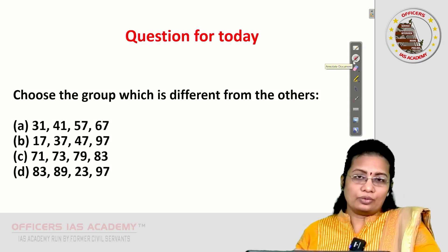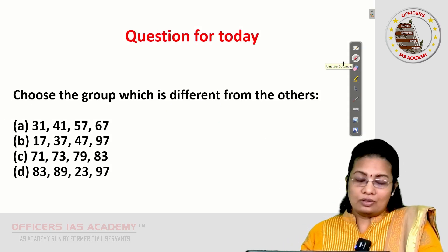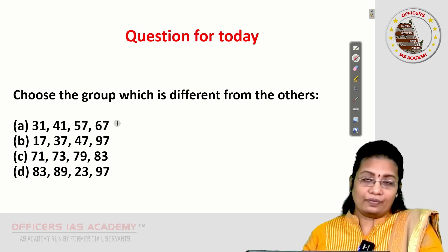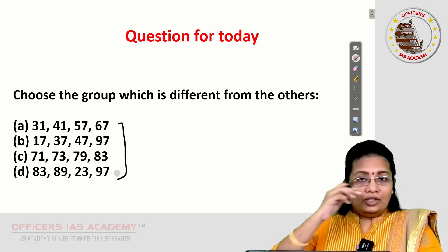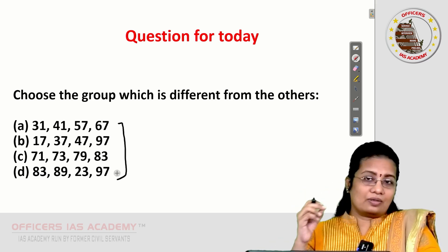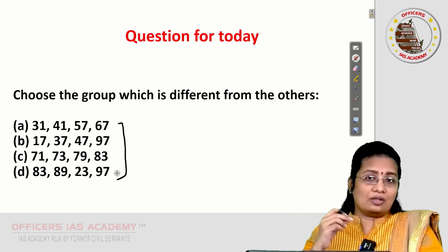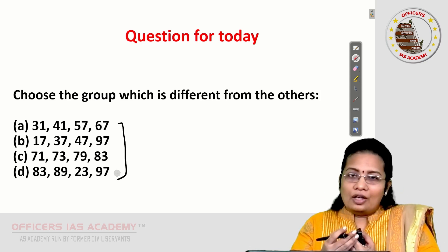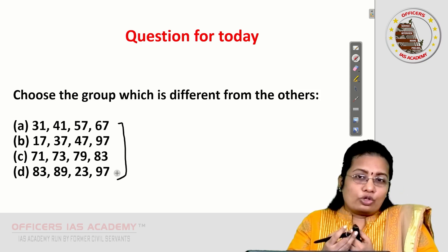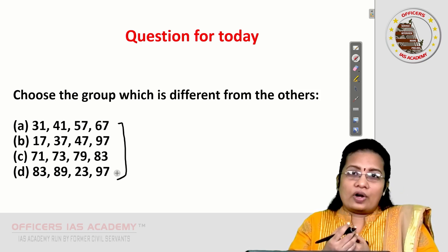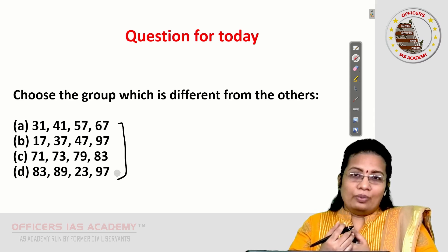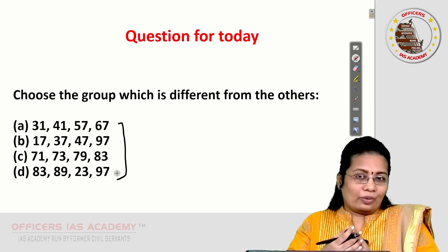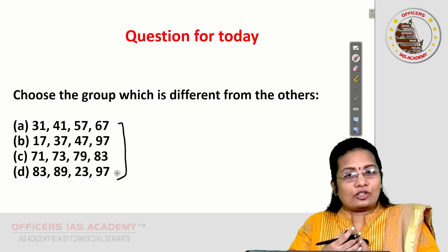Today's question: choose the group which is different from the others. Four options A, B, C, D are given — each is a set of numbers. Find which set is different from the other three and post your answer in the comment section. We'll meet you in the next session with another interesting question. Thanks for watching.